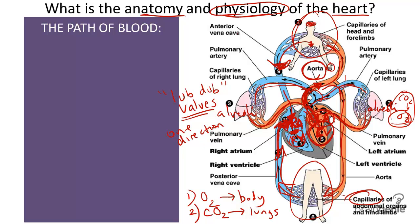So, also, please understand there's really no such thing as blue blood. It's not naturally occurring in the human body. It's just colored or dyed blue for the purpose of learning and differentiating oxygen-rich and oxygen-poor blood. So, let's just go through the path of blood, just to review.